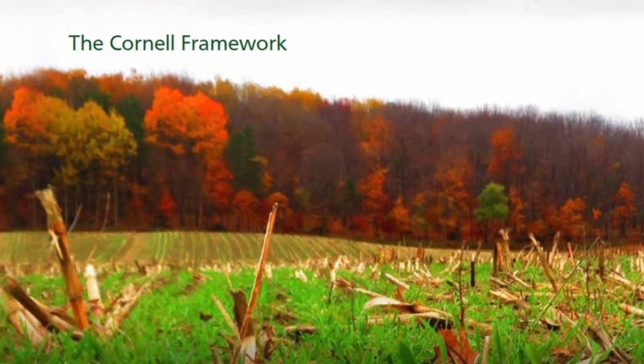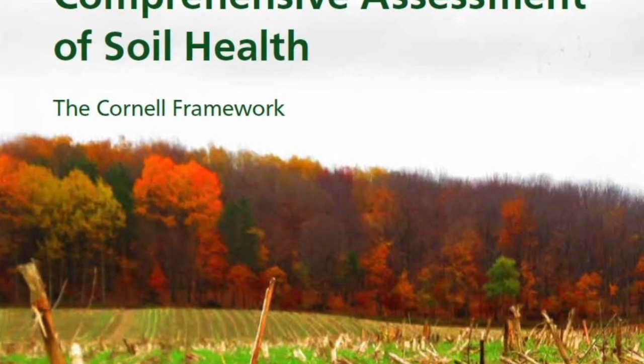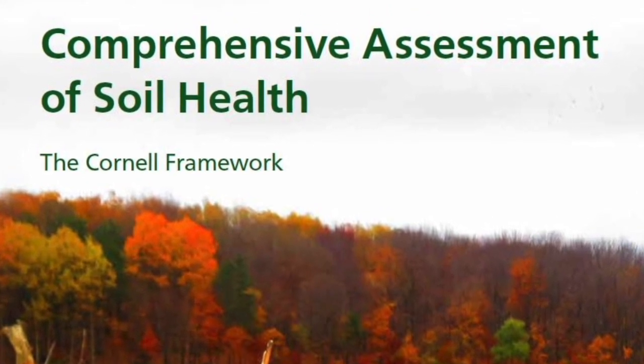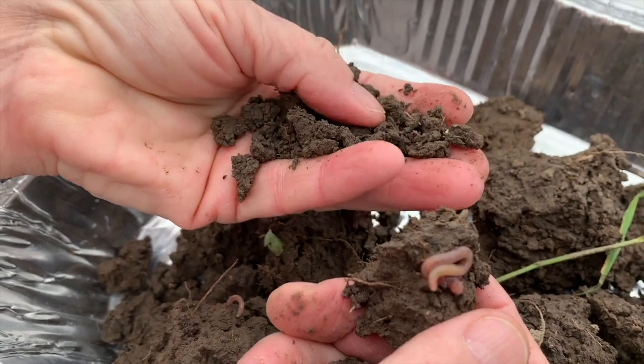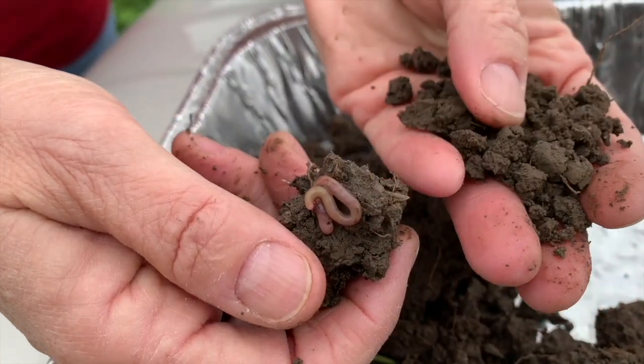One of the most well-known soil health tests is Cornell's comprehensive assessment of soil health. One of the underlying principles to understand is that you can evaluate soil health indicators in different ways. There are three common ways: more is better, less is better, and optimal ranges. To give an example using soil organic matter — that's an indicator where more is better. The more organic matter you have in the soil, the better it is for soil health, and you would get a better score.